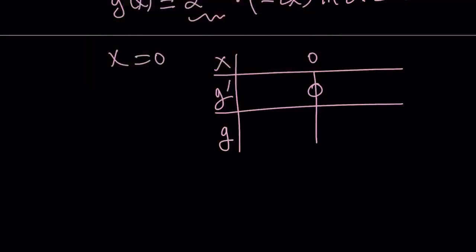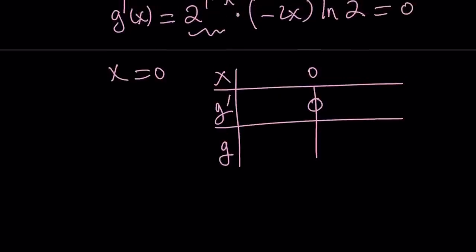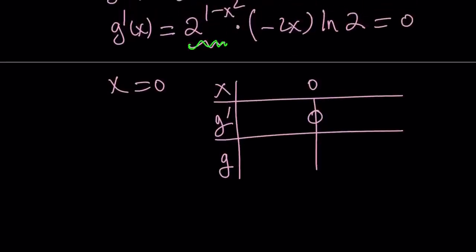Now, on this table, we need to check whether g prime is positive or negative. But it's easy to do. Look, the exponential is always positive. ln 2 is positive because it's greater than 1. So, it depends on x. If x is positive, derivative is negative. If x is greater than 0, the first derivative is negative. Otherwise, it is positive. It's going to increase and then decrease, giving us a max at 0.